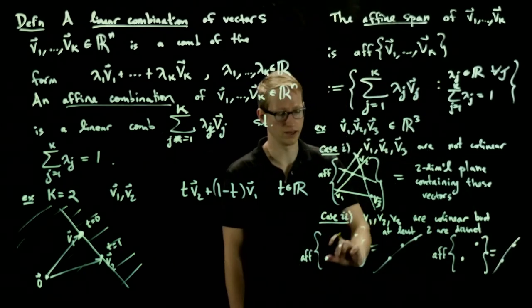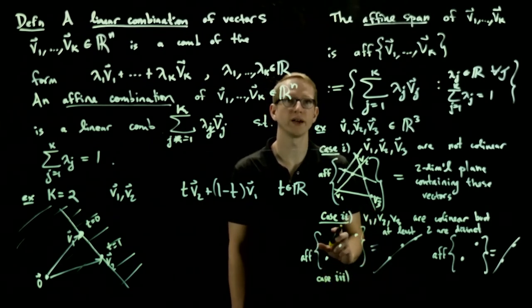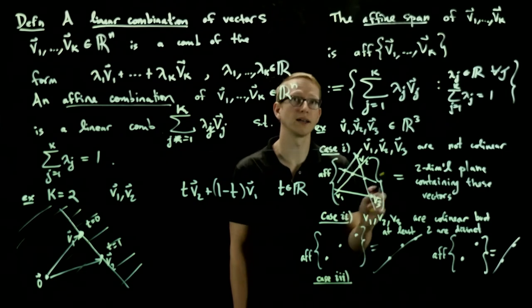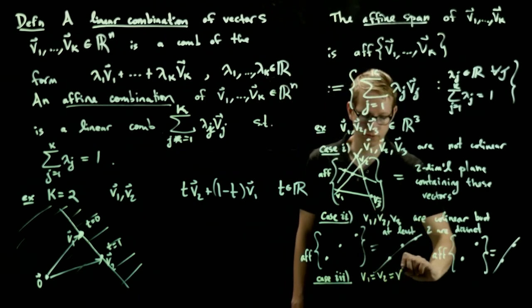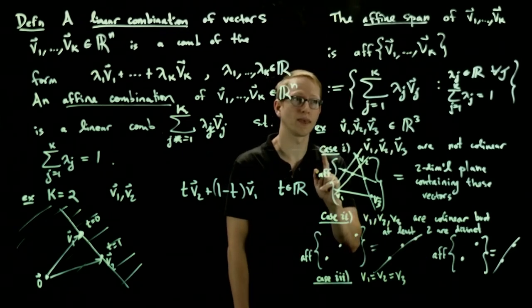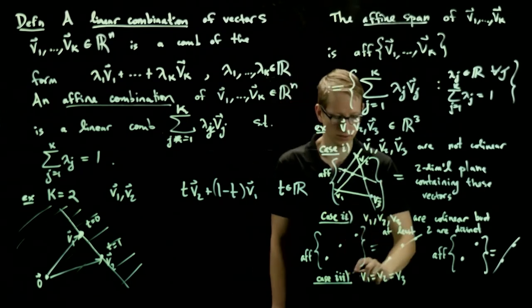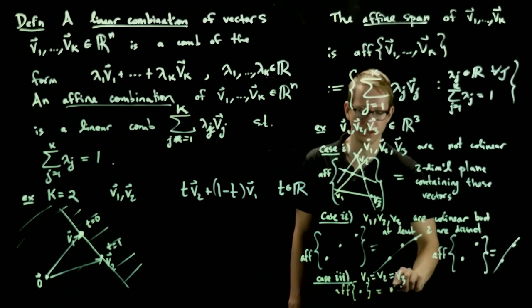And the final case, case three, is when all those vectors are exactly the same vector. And when this happens, we only have a single point, and all affine combinations of a single point is just that point itself.